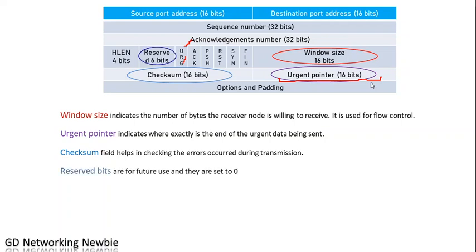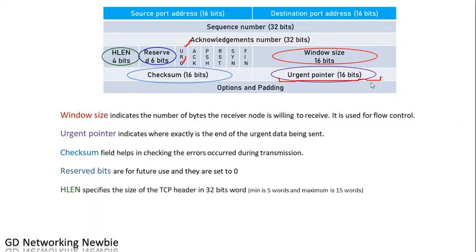There are some reserved bits — those bits are for future use and they are always set to zero. The header length (H length) field specifies the size of the TCP header in 32-bit words. The size of the TCP header is from 20 bytes to 60 bytes, and the header length is provided in 32-bit words. The minimum is 5 words and the maximum is 15 words. One word equals 32 bits, so minimum 5 multiplied by 32 equals 160 bits, which is 20 bytes. You can calculate the maximum bytes for the TCP header from this.